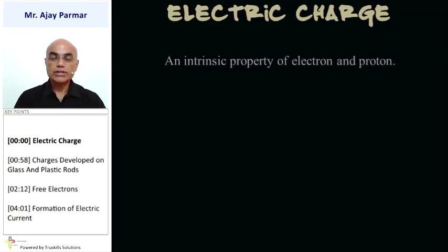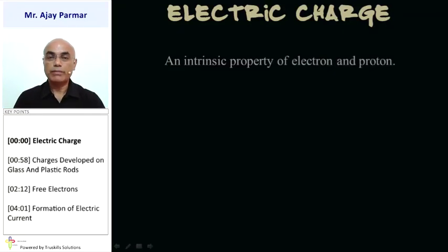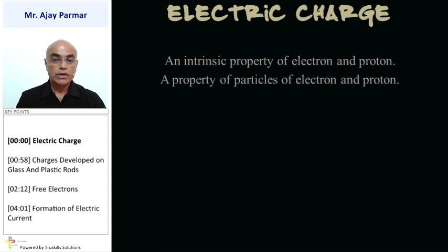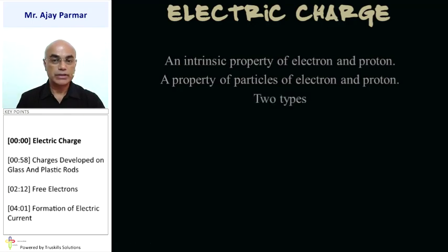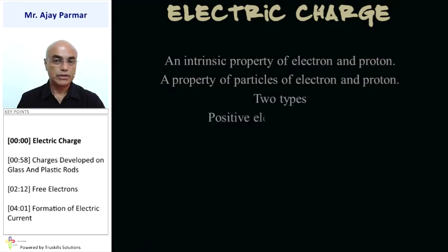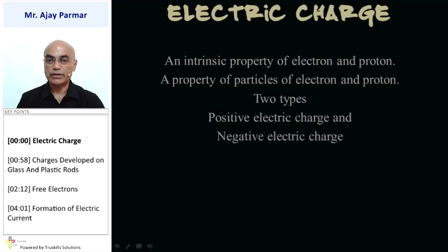Electric charge — just like all matter has volume and mass as fundamental properties, the intrinsic property of electrons and protons is electric charge. When we classify electric charges, they are basically of two different kinds: positive electric charge and negative electric charge.